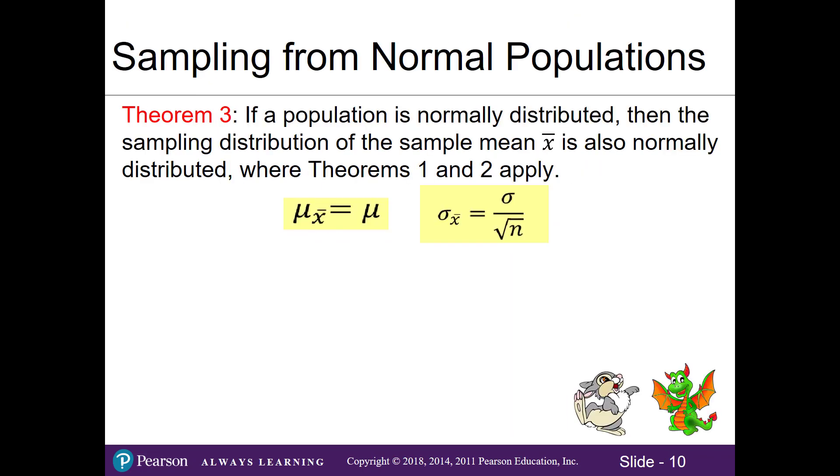Theorem 3 states that if a population is normally distributed, meaning it's bell-shaped, then our sampling distribution of the sample mean is also normally distributed, where theorems 1 and 2 apply. In other words, we're combining theorem 1 and 2 as long as our population is bell-shaped.